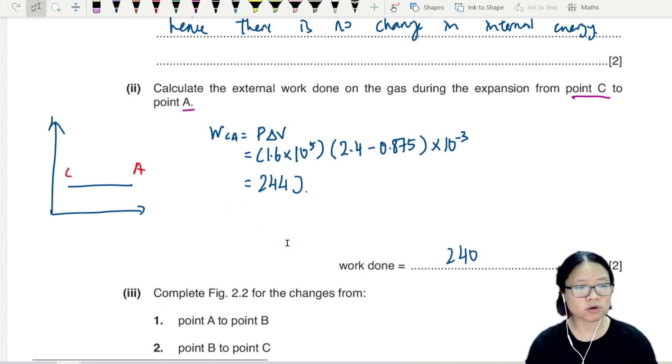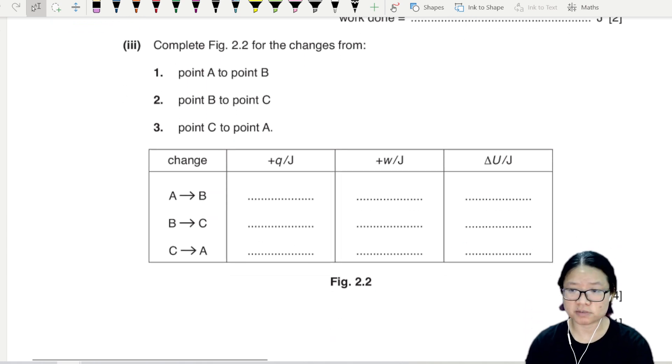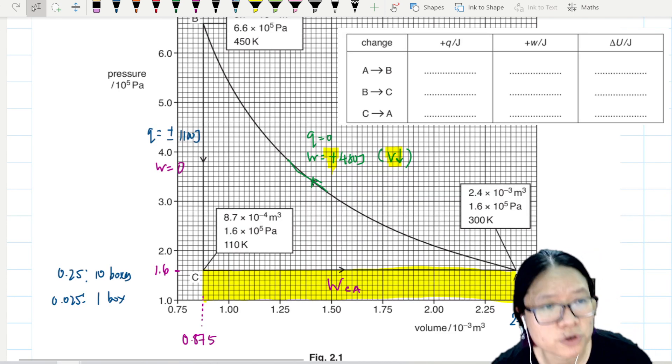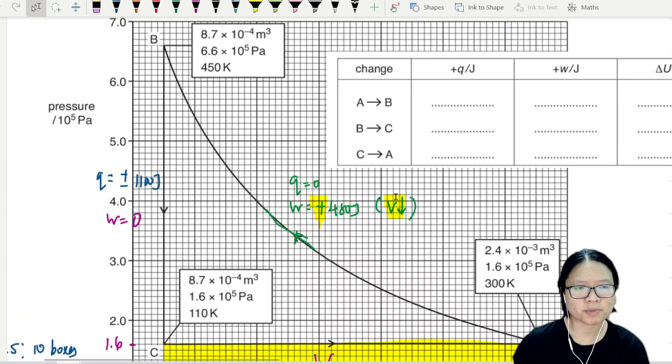This will give me 1.525 times 1.6, 2.44. So this will be 244 joules, or if I want to write 2 sig figs, then 240. And finally we have a sudoku. We have to complete the table: changes from different parts of the interaction, q, w, and delta U. This one is actually quite a nice bonus mark, but to do that I'm going to bring the table to the graph.